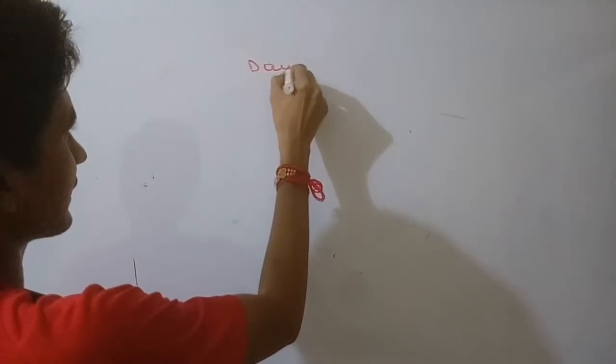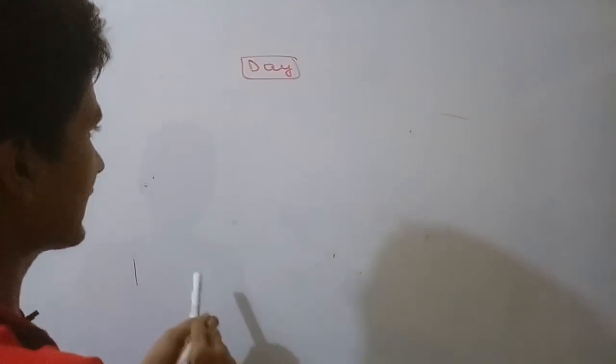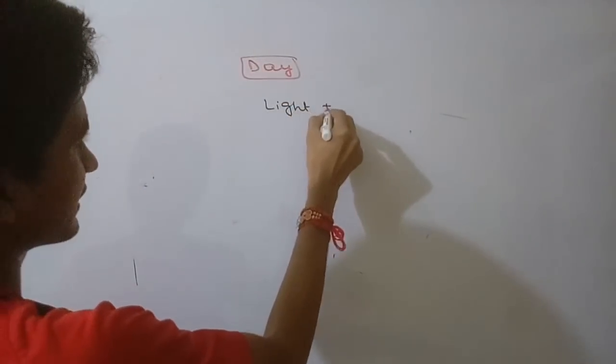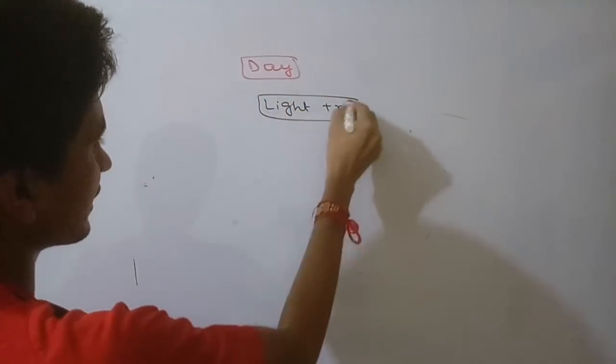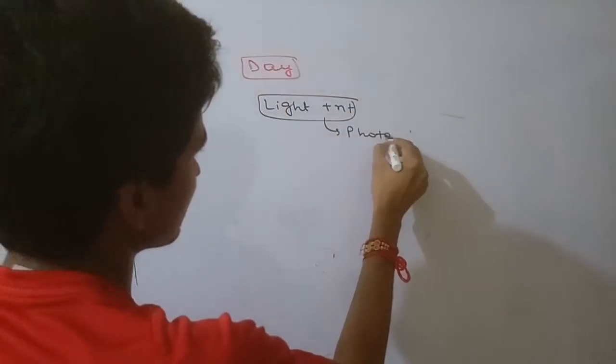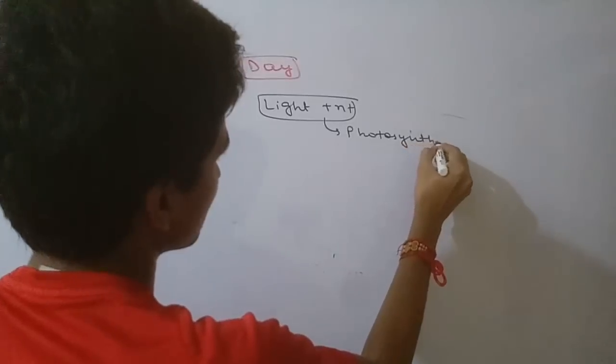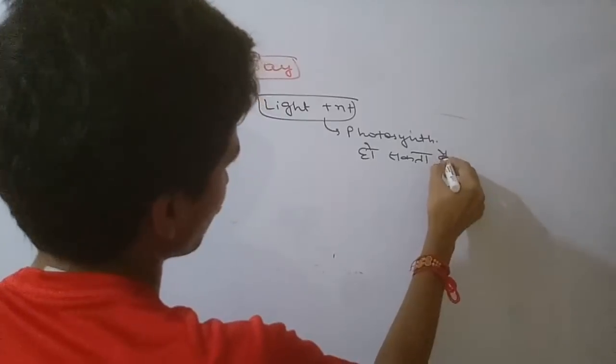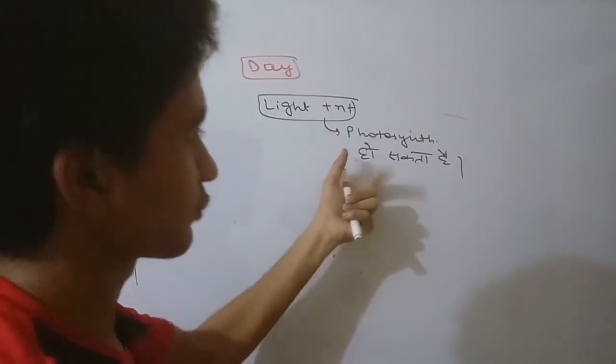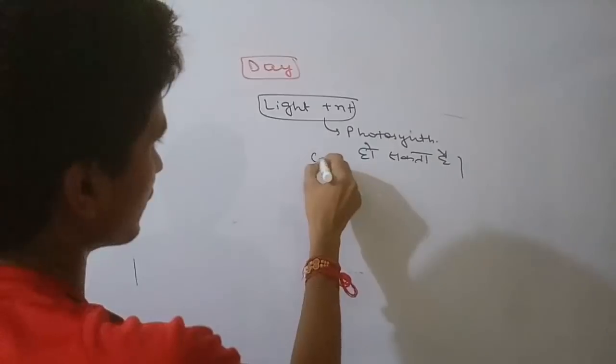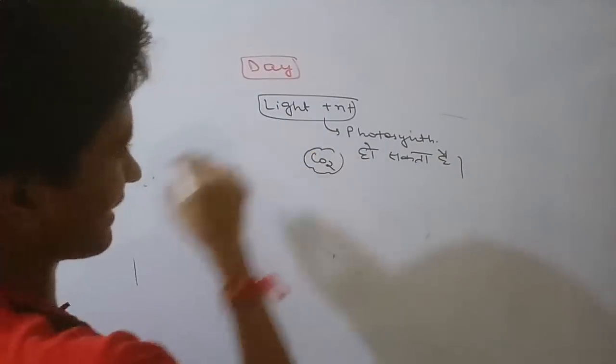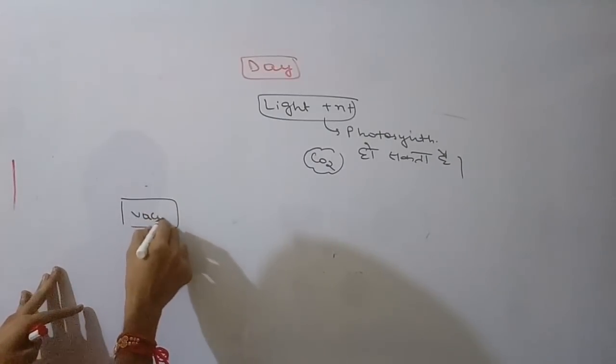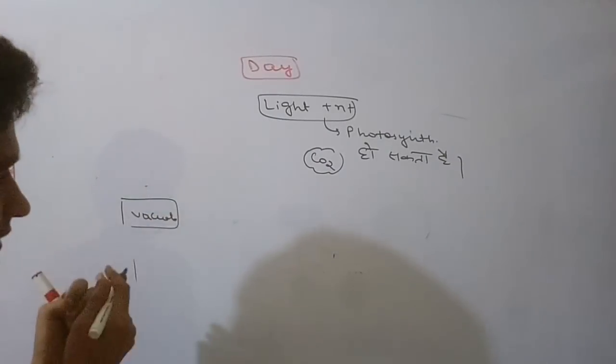Now coming to daytime. During daytime, light is present and photosynthesis can happen. Light is present so photosynthesis occurs. CO2 is required for photosynthesis. The CO2 that was stored in the form of aspartic acid and malic acid in the vacuole is now used.